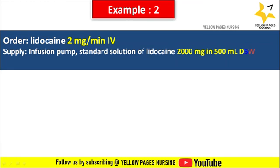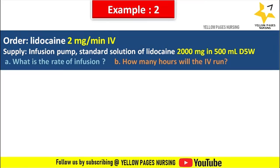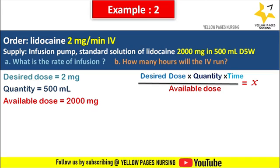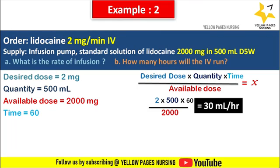What is the rate of infusion and how many hours will the IV run? As per the formula: desired dose × quantity × time ÷ available dose = X. Here the desired dose is 2 mg, quantity is 500 mL, available dose is 2000 mg, and time is 60 minutes. In the previous example the available dose was in grams, so we multiplied the denominator by 1000. In this example both doses are in milligrams, so the denominator is taken as-is. Therefore: 2 × 500 × 60 ÷ 2000 = 30 mL per hour. We set 30 mL per hour in the infusion pump.